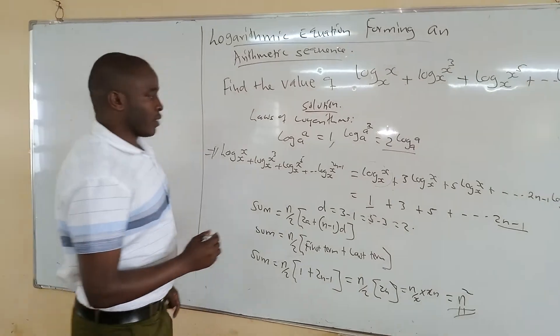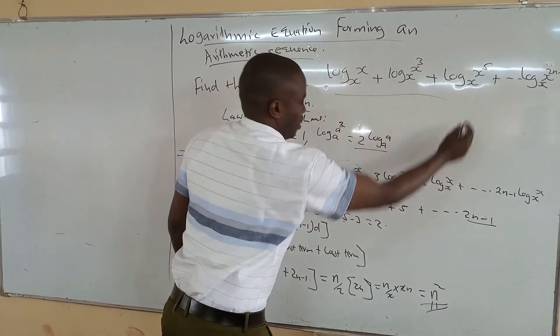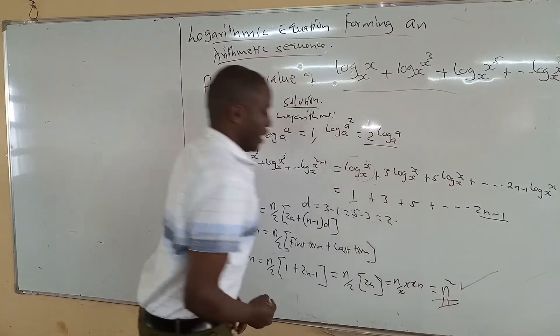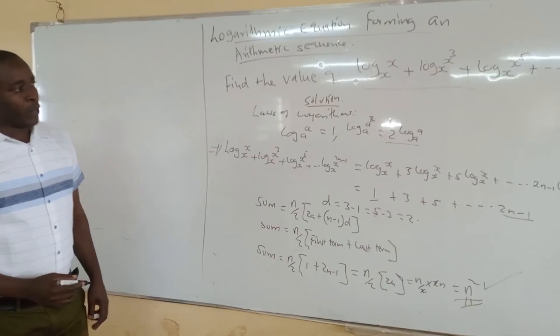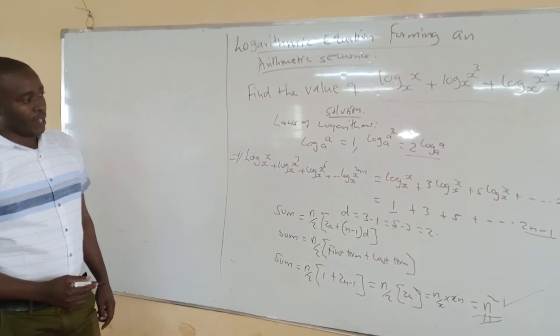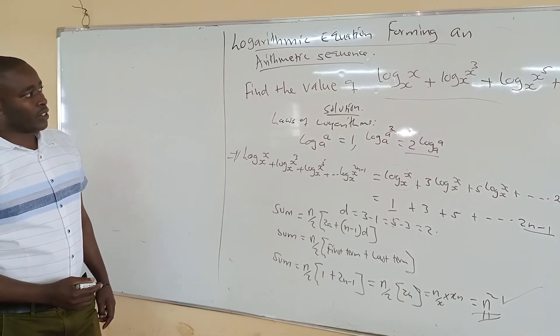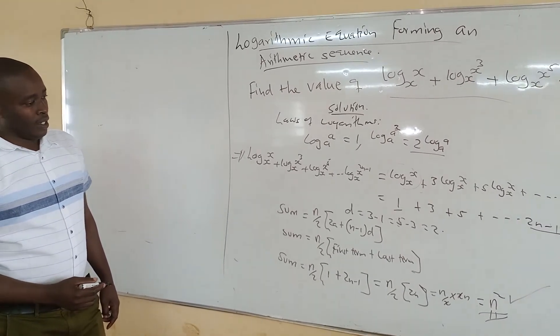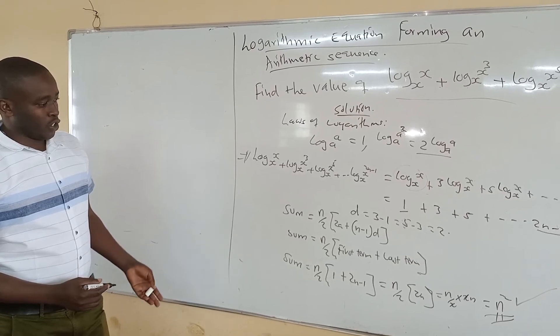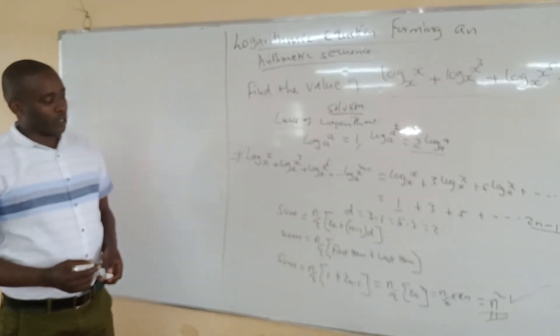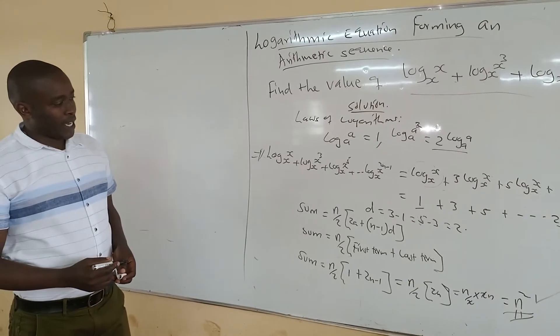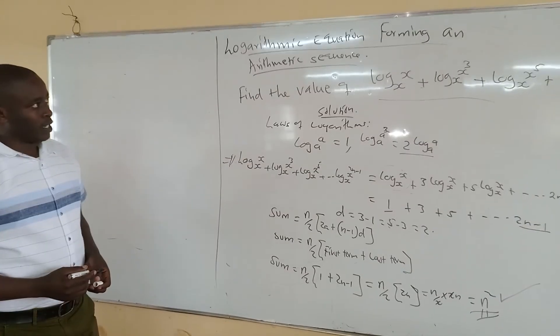So the sum or the value of that is n squared. So that is how simple the equation was, but from the look of it, you could have seen it as so difficult and so hard to solve. But it is a simple question if you just follow the laws of logarithm and also the formulas that you have learnt in arithmetic sequence.